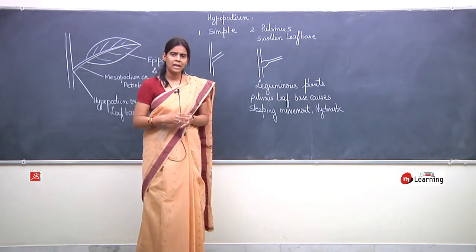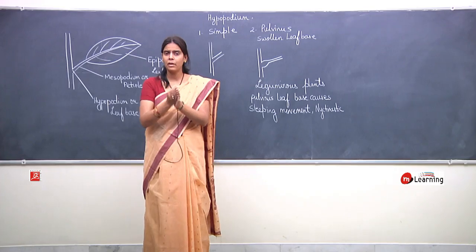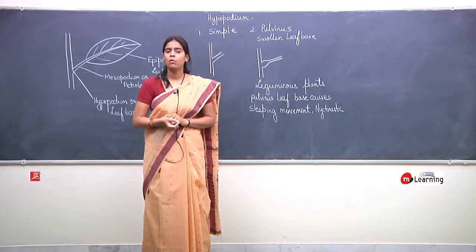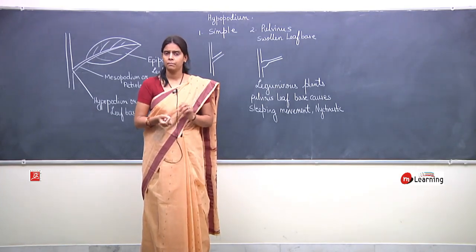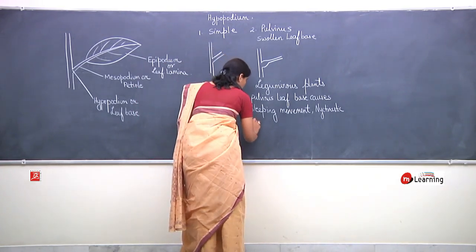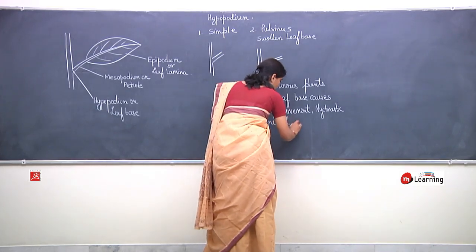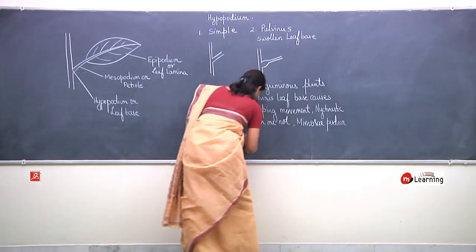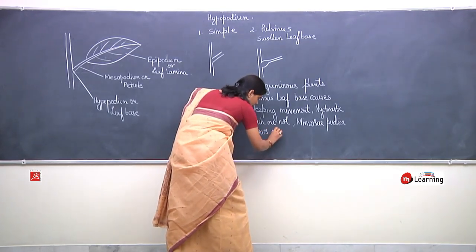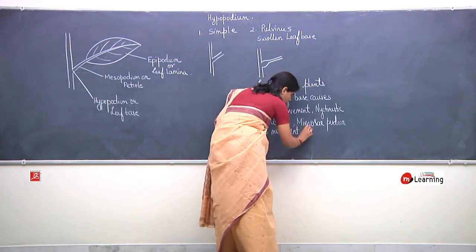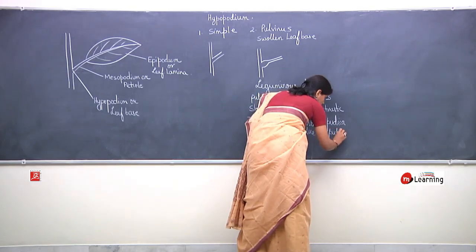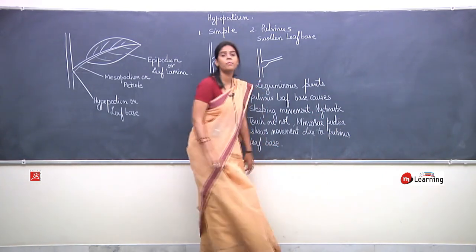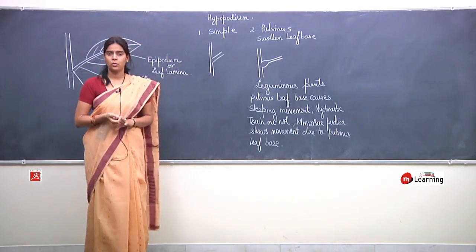Mango mein bhi pulvinus leaf base hai, but kya mango ki leaves fold hoti hain? Nahin. Yeh sirf Leguminosae family ke members mein hoti hai, jin mein compound leaves observe ki jaegi. Mango mein simple leaf hoti hai and mango is not a member of Leguminosae family. Mimosa pudica mein jo movement ho raha hai, woh pulvinus leaf base ki wajah se ho raha hai.